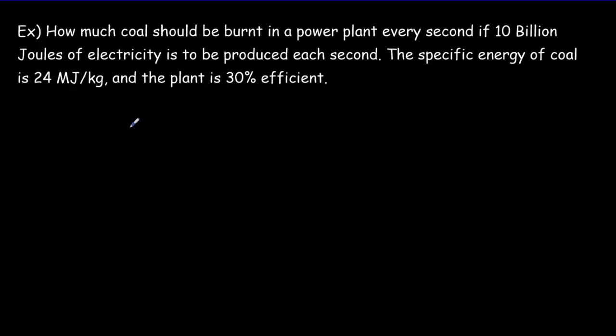So I'm given three numbers in this problem. Let's just try to sort those numbers out. The first number is this 10 billion joules produced each second. So it's joules per second. That's really a power, and it's being produced, so that's really an output power. Our output power is 10—it's a billion, so times 10 to the ninth power. That would be joules every second, or we could say it was 10 gigawatts, the output power.